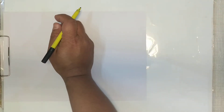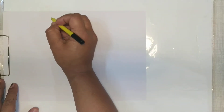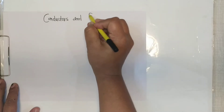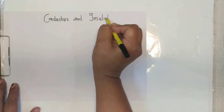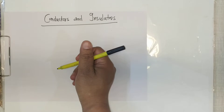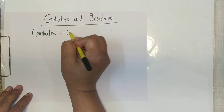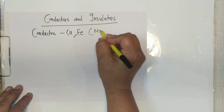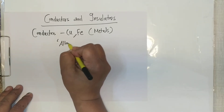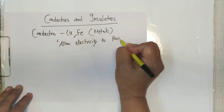Good morning students. Today we'll start with Electrostatics Part 2, continuing from conductors and insulators. Conductors are those which conduct or pass electricity — we have copper, iron, and all metals. They allow electricity to pass and are known as conductors.